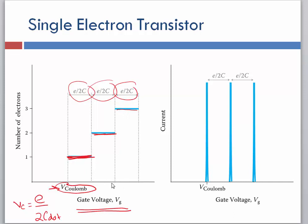So if we apply three times V_Coulomb, then we can get three electrons up there into the quantum dot.